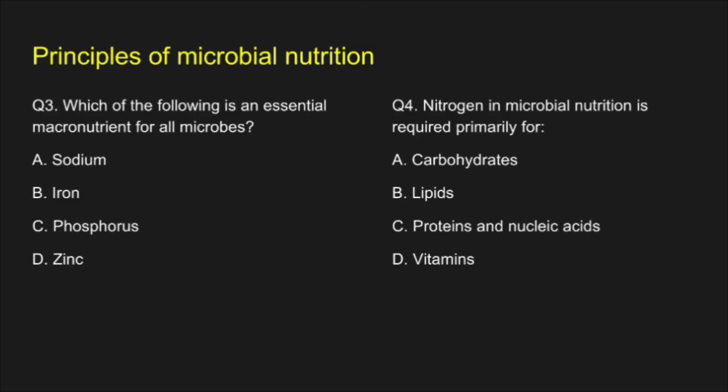Question 3. Which of the following is an essential macronutrient for all microbes? A. Sodium, B. Iron, C. Phosphorus, D. Zinc. The correct answer is C: Phosphorus.